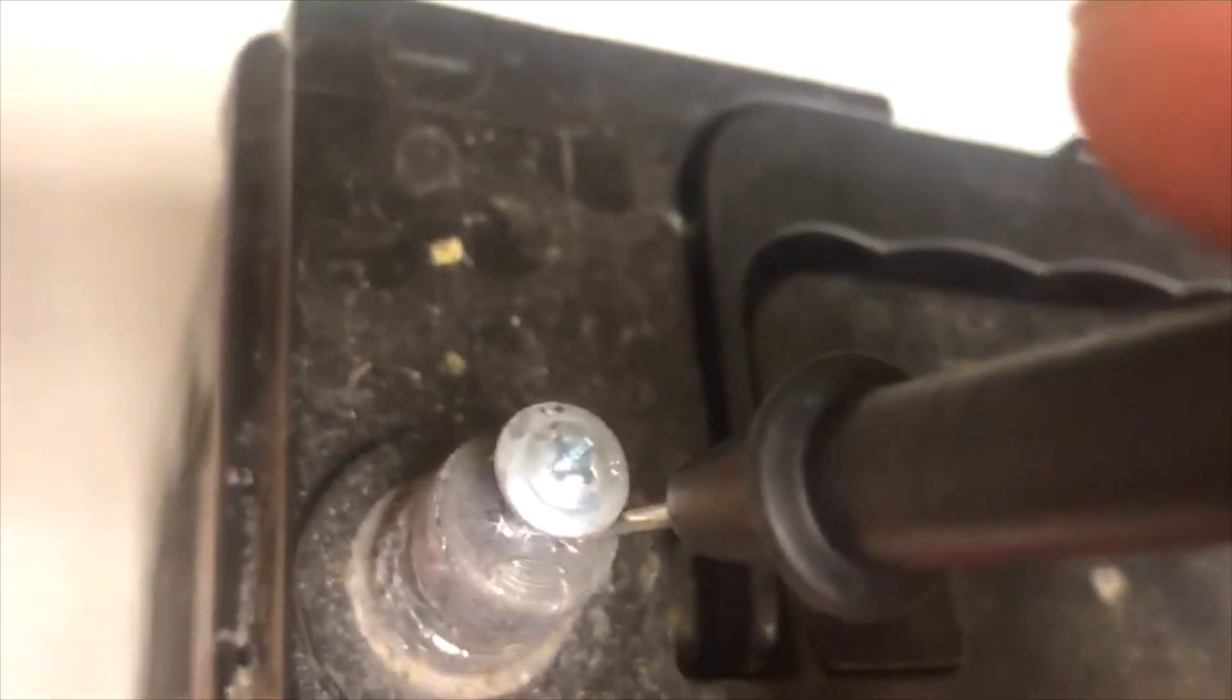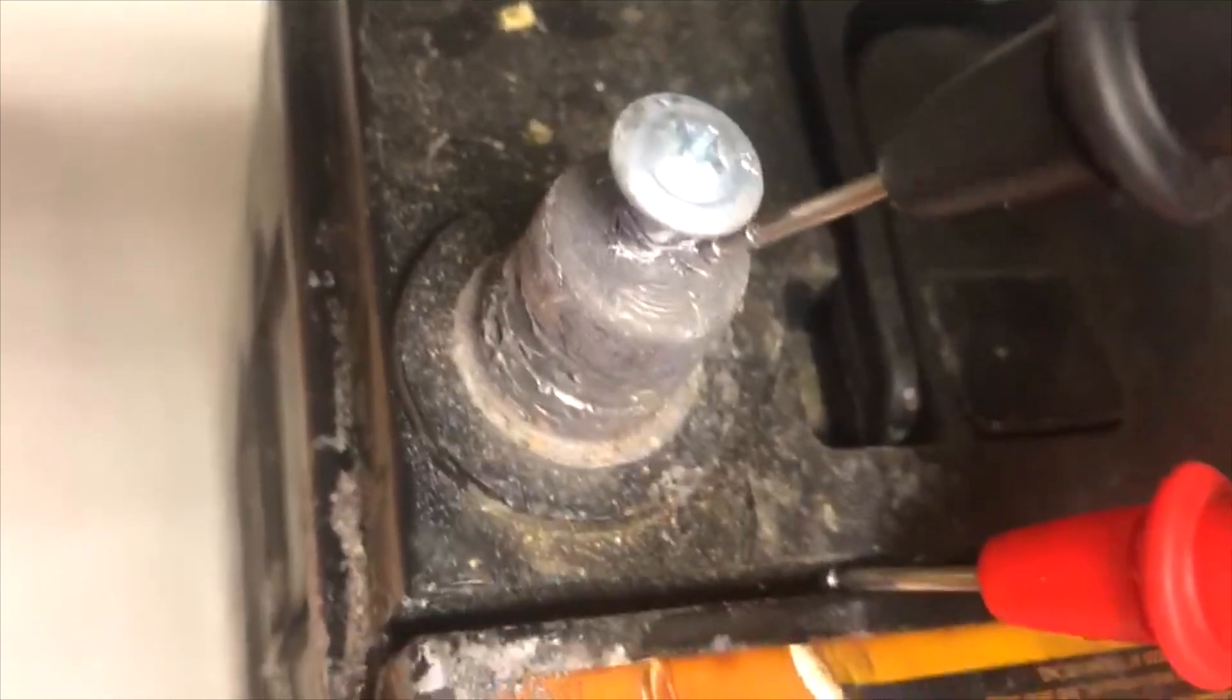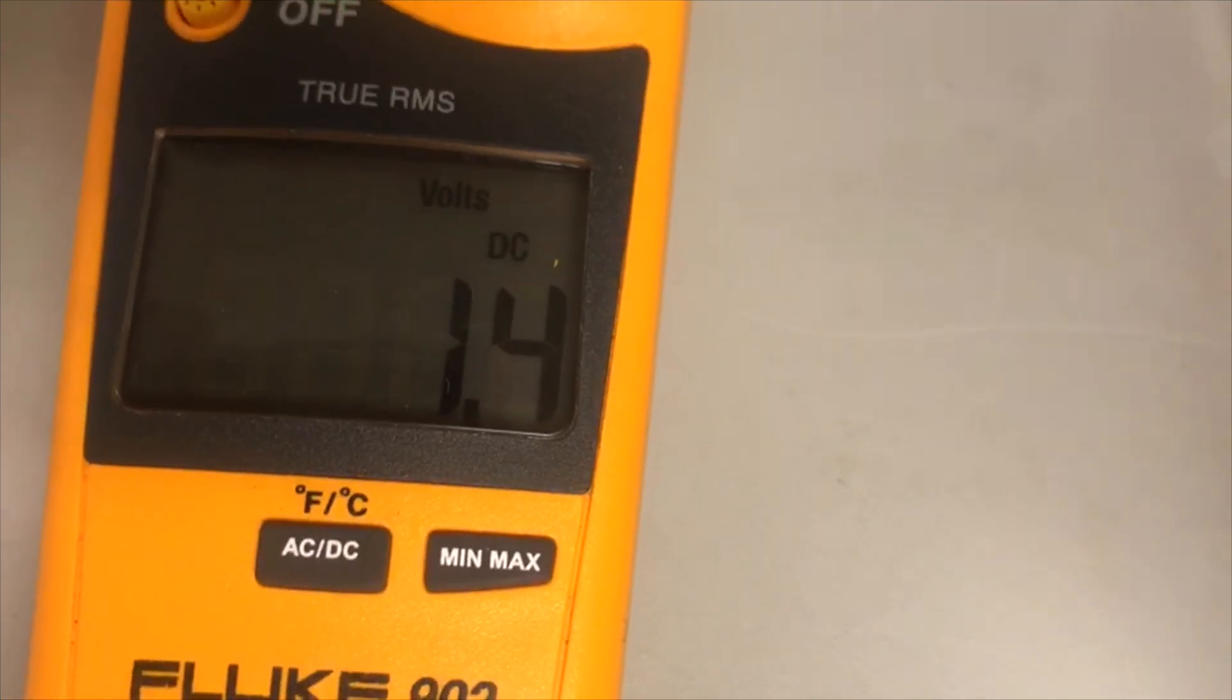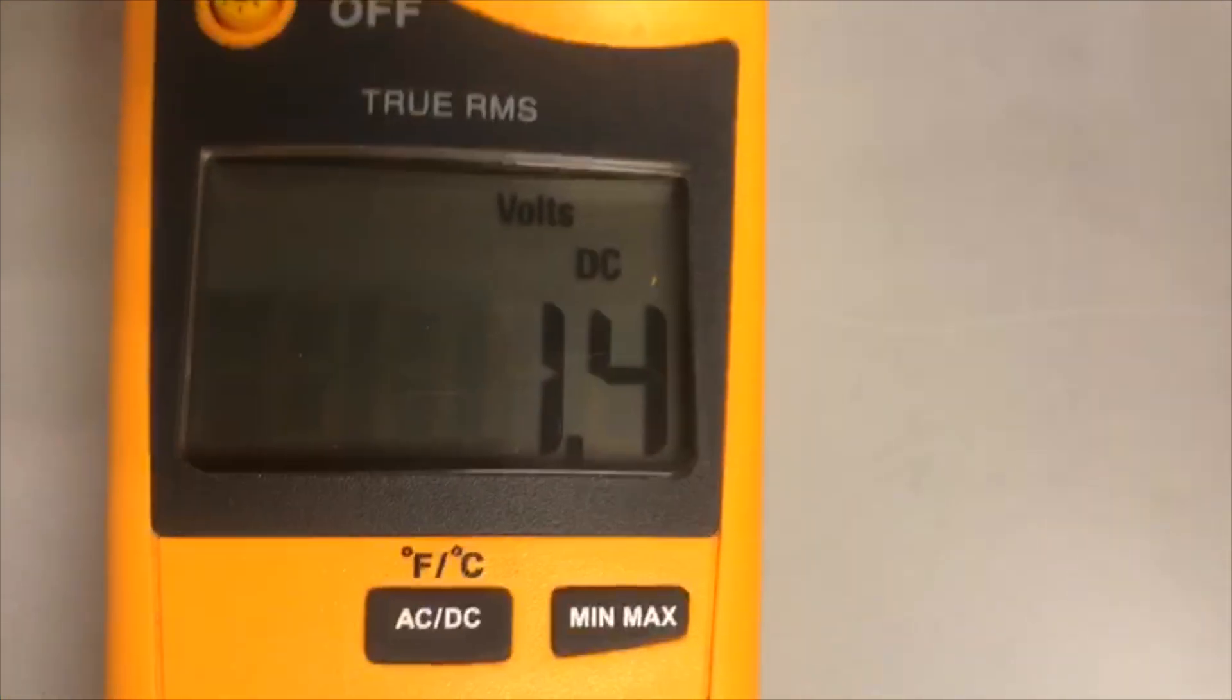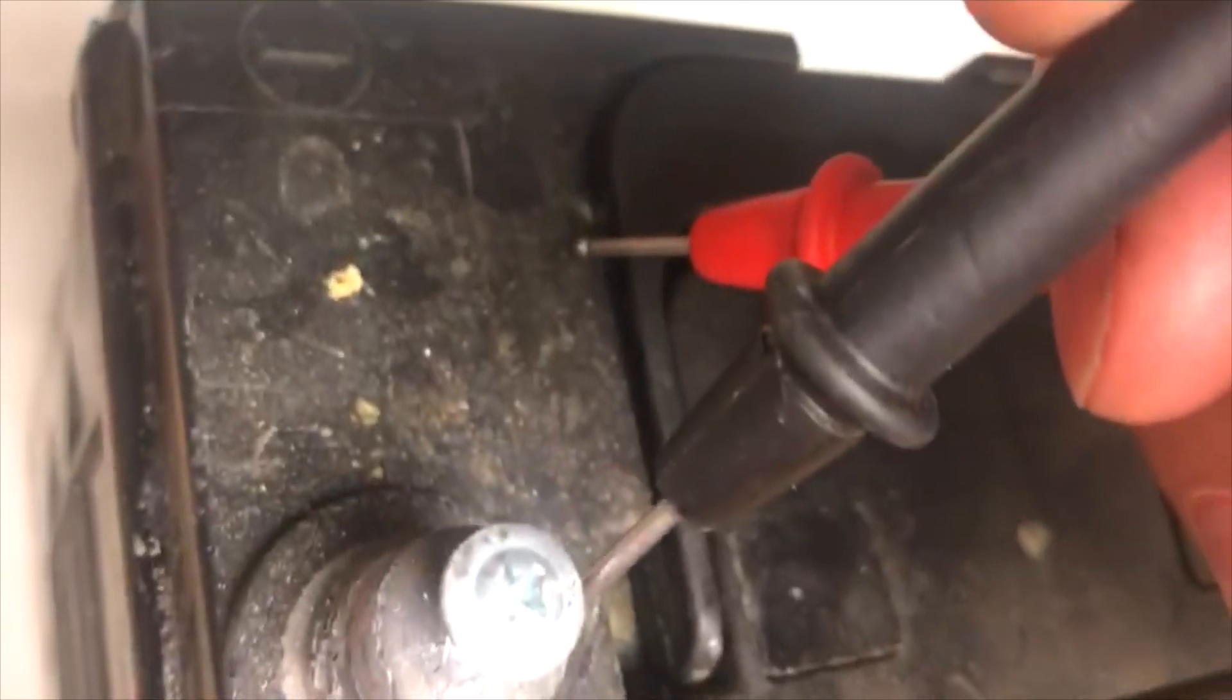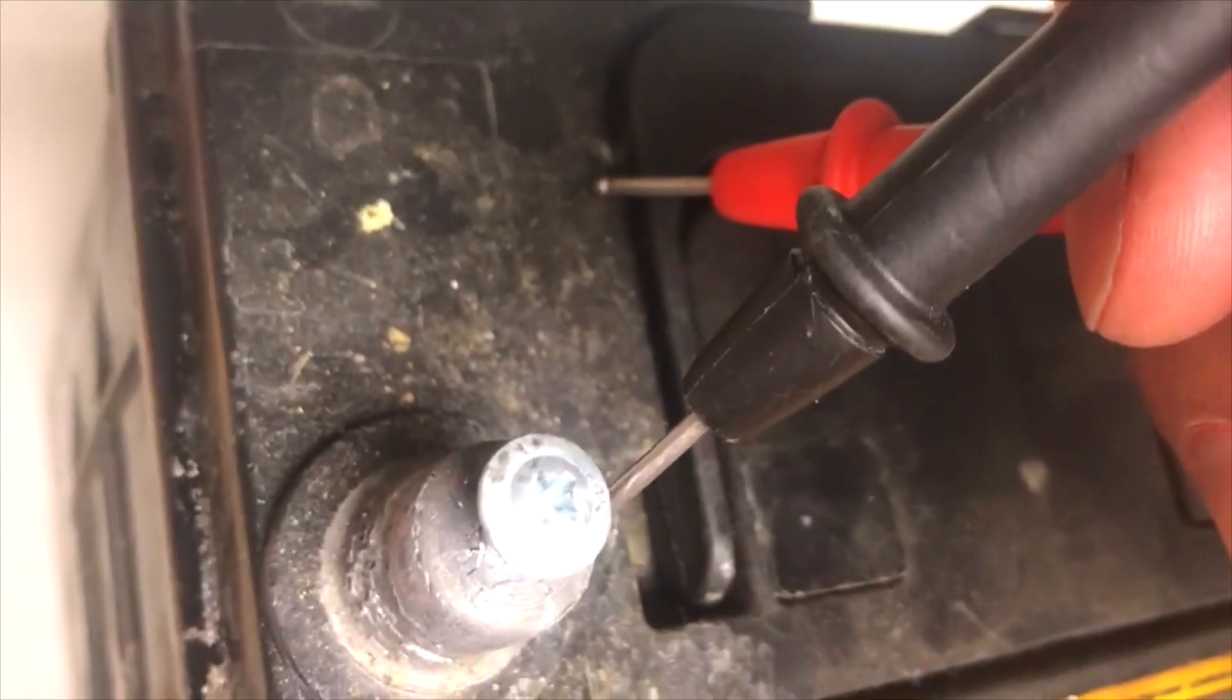On this other side, if I check from here, from the negative to the casing like I am doing here, on this side I am losing 1.4 volts. So this is a very important check because like in this check right now, I'm going to the casing.